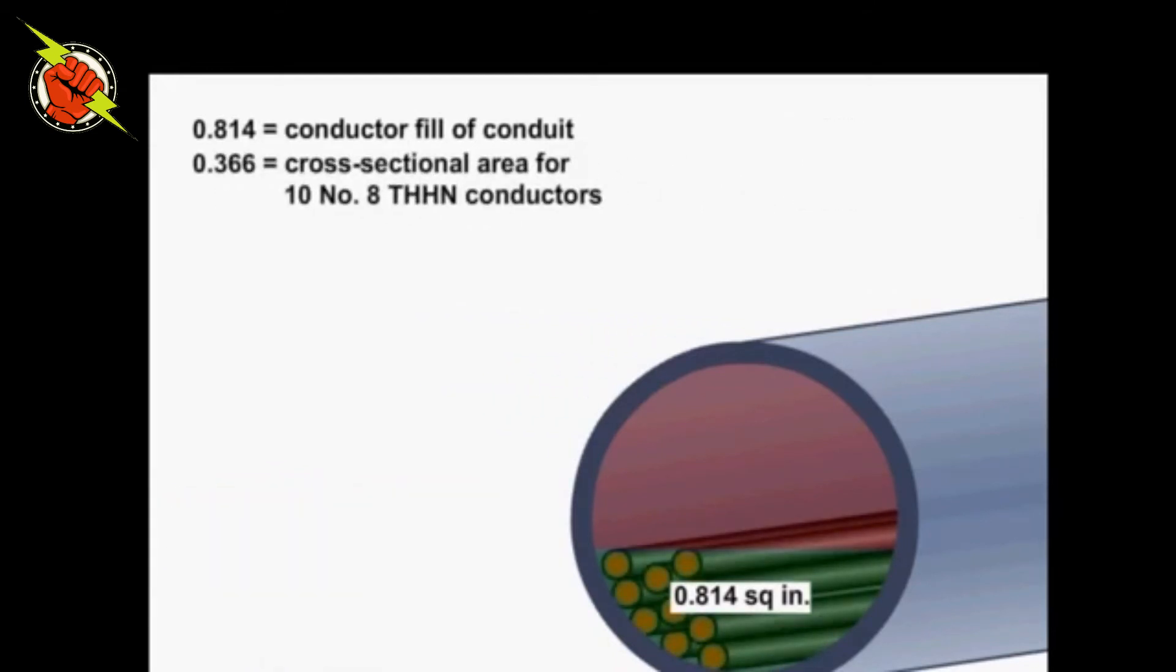Step 3. Determine the cross-sectional area available for additional conductors. Subtract the cross-sectional area of the pre-existing conductors from the conductor fill of the conduit. The cross-sectional area available for additional conductors equals 0.448 square inches.